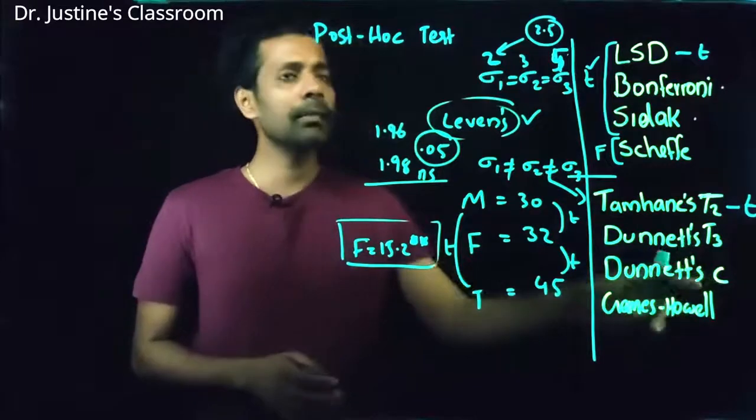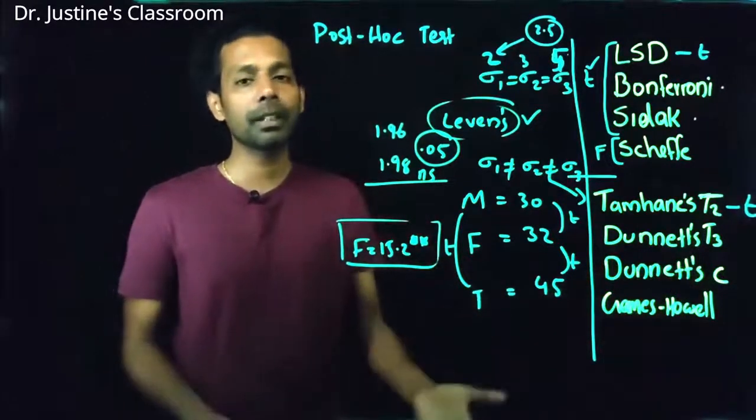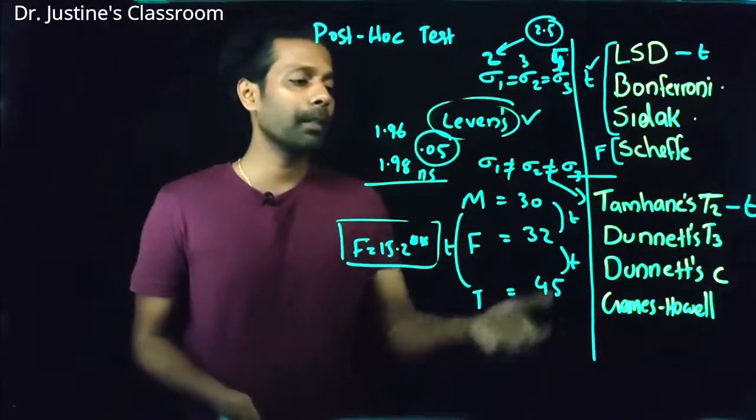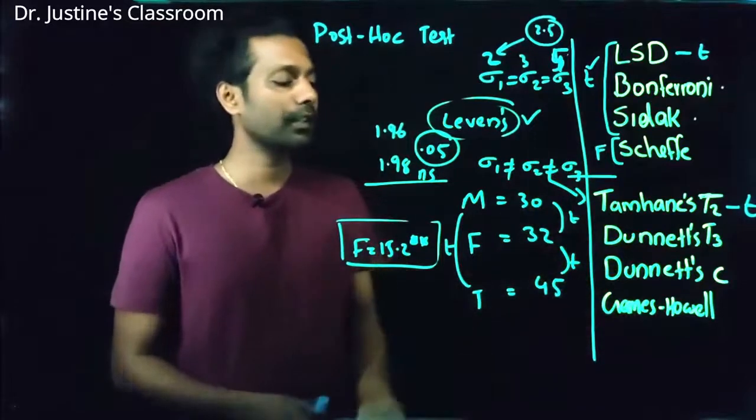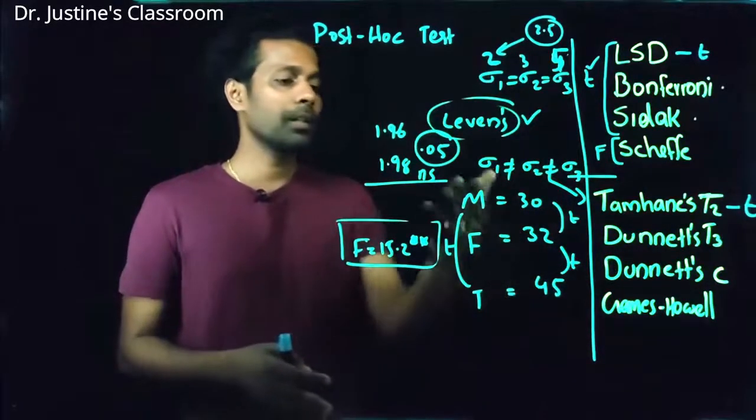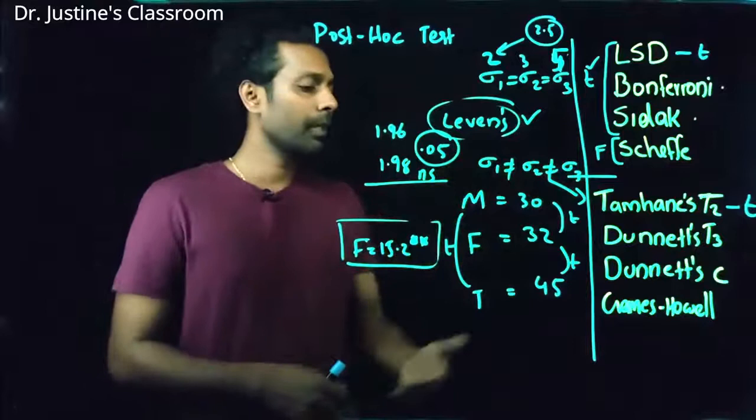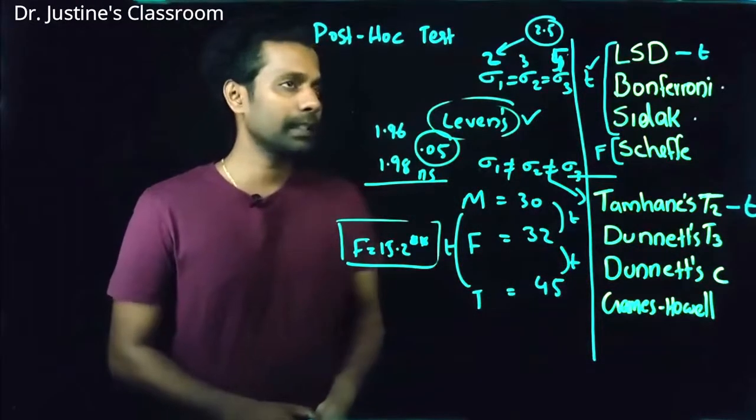Studentized maximum modulus value. And Dunnett's C, this method is considered as the most liberal method when you go for a post-hoc analysis in which equal variances are not assumed.